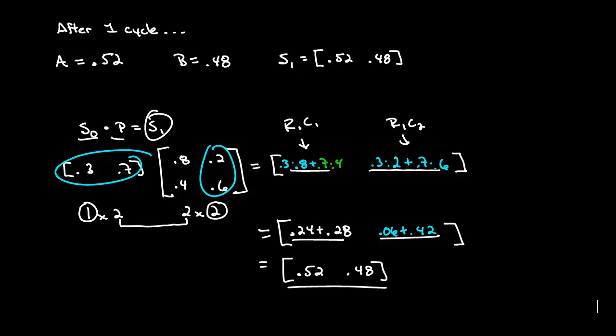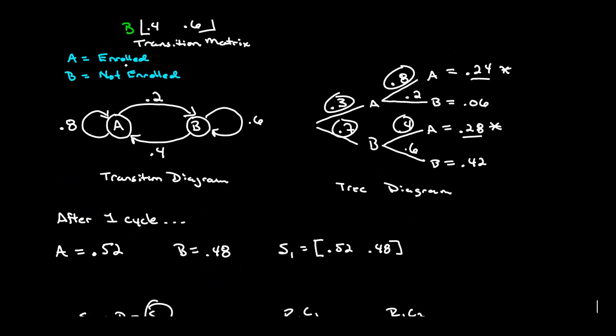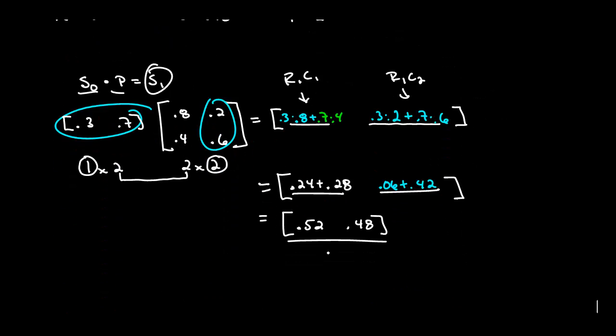So what this tells us, the big picture here, is we went from 30% being in state A to 52% being in state A. Well that makes sense because a lot of people who are enrolled stay enrolled and we're getting 40% from the people that are unenrolled. So we should see this guy start to increase. And that's exactly what we saw. Now how do we do this in our calculator?